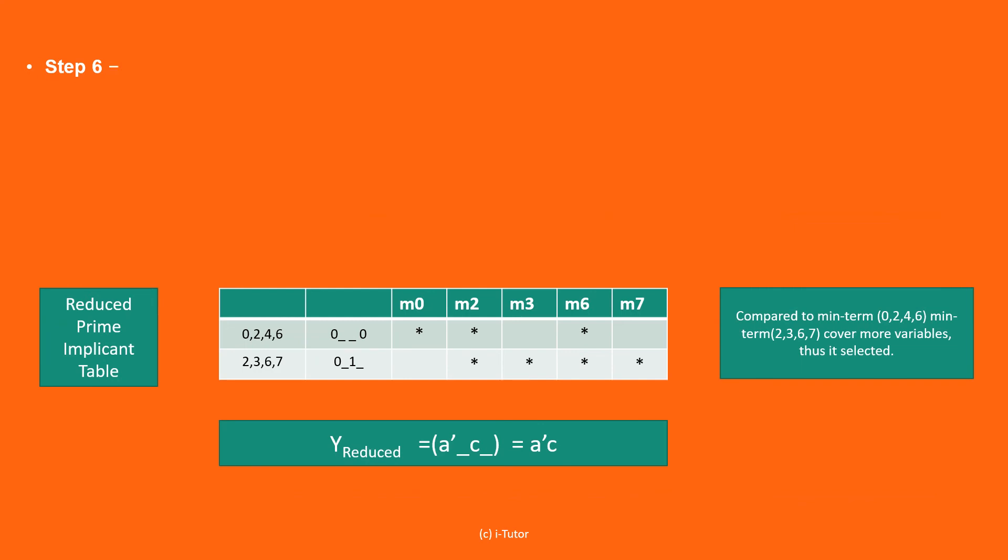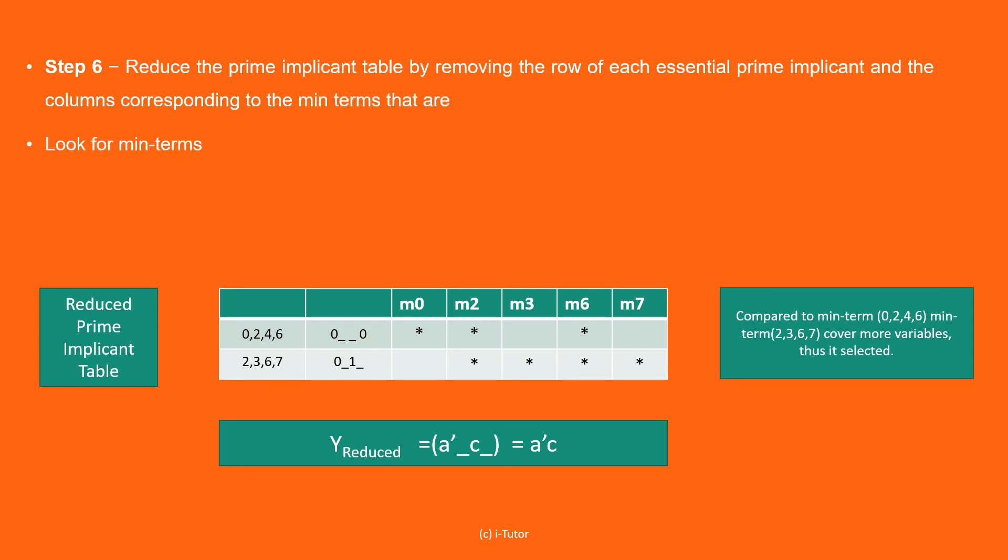Step six. Reduce the prime implicant table by removing the row of each essential prime implicant and the columns corresponding to the minterms that are covered in that essential prime implicant. Look for minterms which can be selected such that they cover maximum non-covered variables. Stop this process when all minterms of given boolean function are covered.